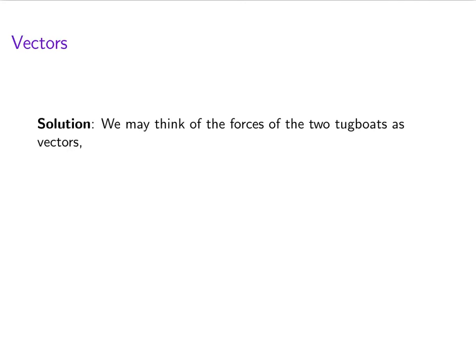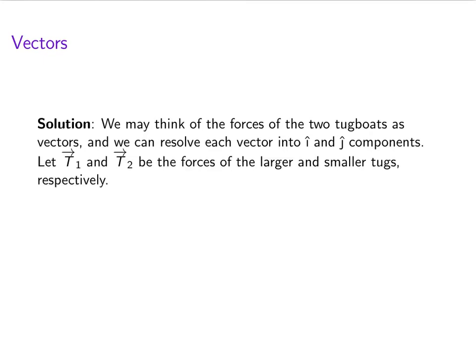Okay, let's think of the forces of the tugboats as vectors, and we'll resolve each one of these vectors into i and j components. Now let's use some notation here. We'll say that T1 and T2 are the forces of the larger and the smaller tugs respectively. The larger tug in the picture was the one that was on top. T2 is the force for the smaller tug.